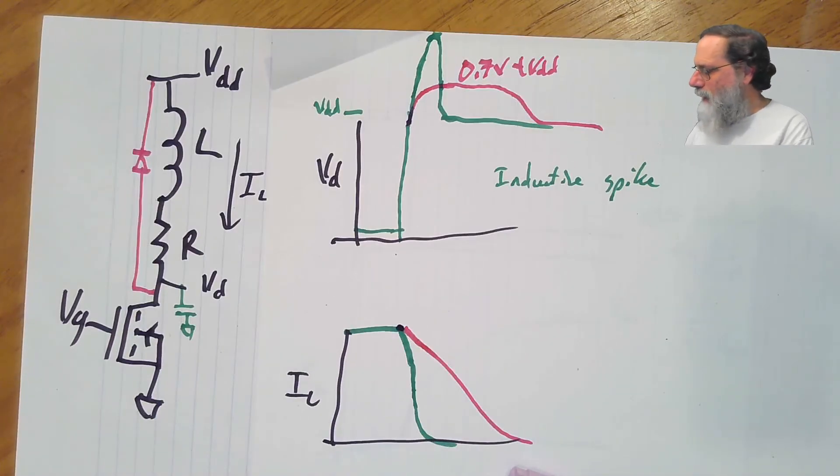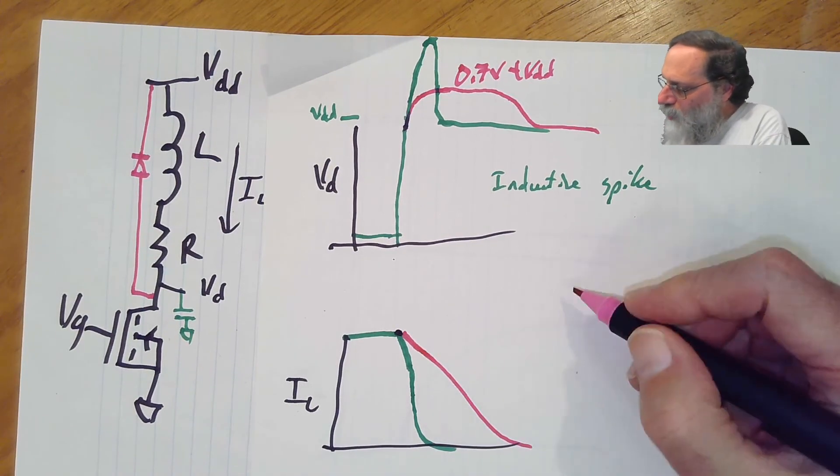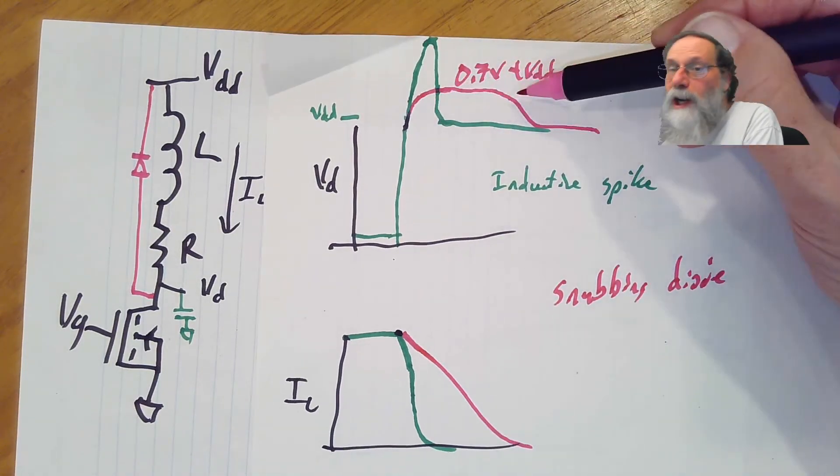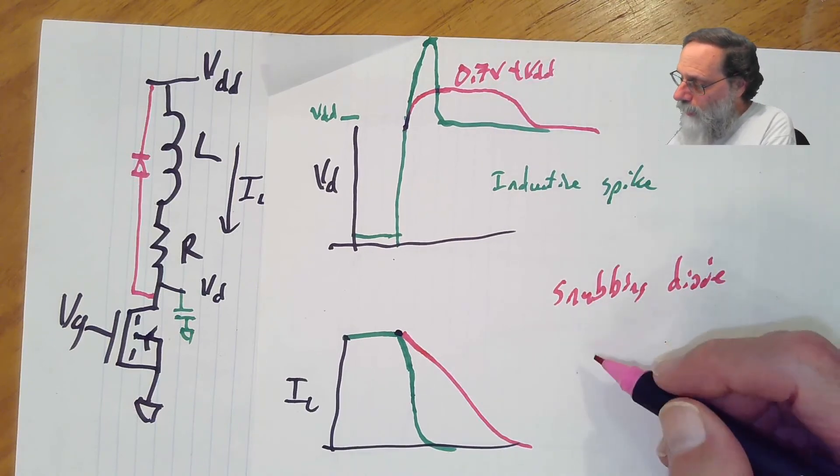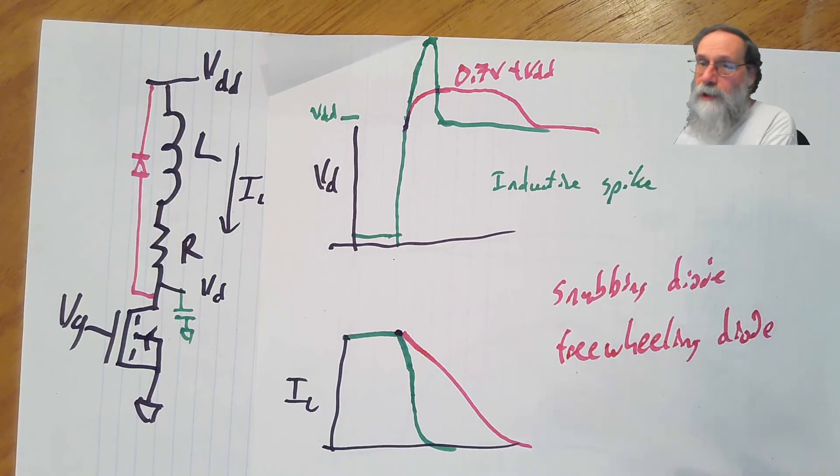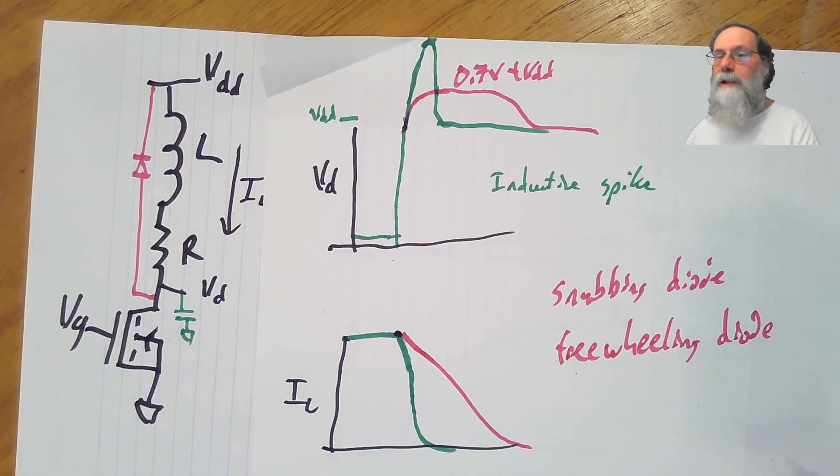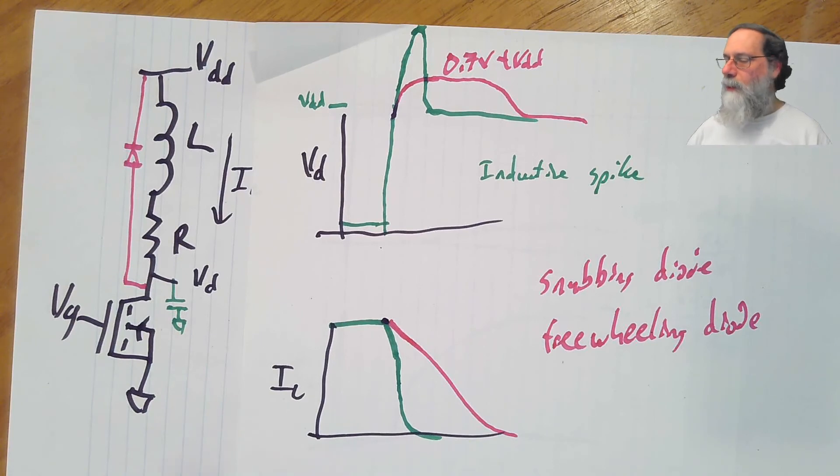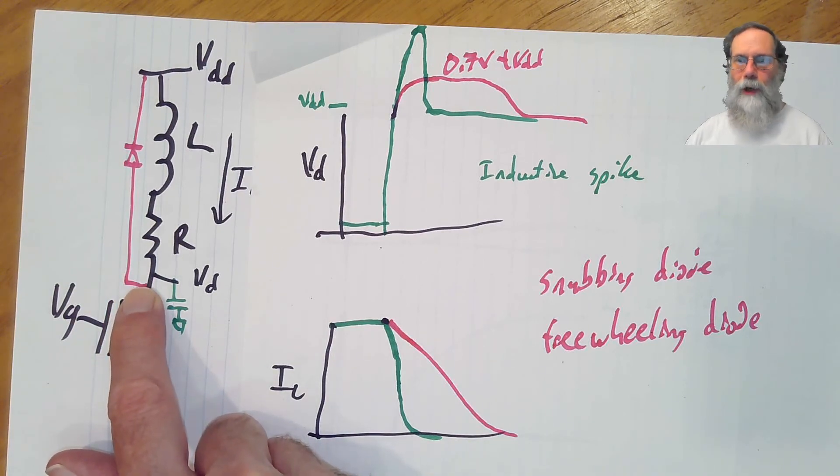That sort of diode goes by many different names. It can be called a snubbing diode because we've snubbed the voltage here, kept it from getting too big. It's also sometimes called a freewheeling diode, because if this inductor is a motor, what happens is that the motor continues to spin as long as that current can still be flowing through there. And we almost always need to have some sort of diode like this when we are driving an inductive load, because those spikes really are a serious problem, and you do not want them propagating through your system. You want to make sure that there's always some place for the current to go when you turn off the inductor.